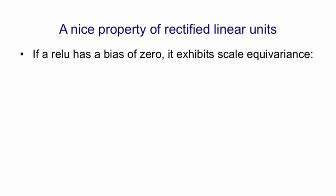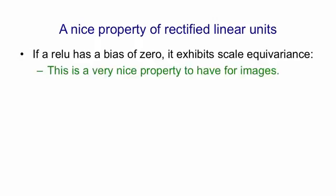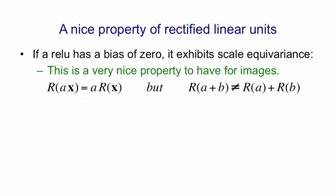One nice property of rectified linear units is that if they have a bias of 0, they exhibit scale equivariance. This is a very nice property to have for images. What scale equivariance means is that if you take an image x...